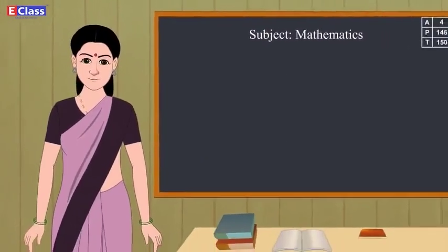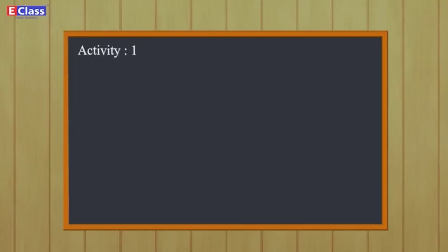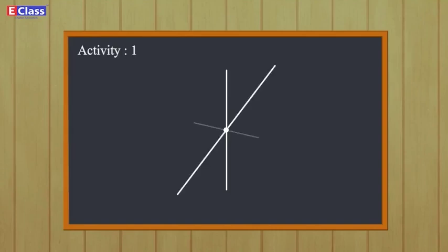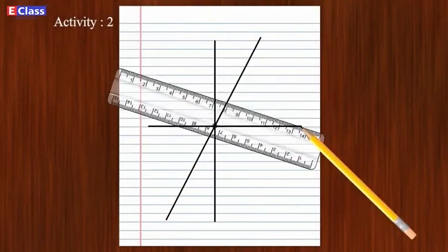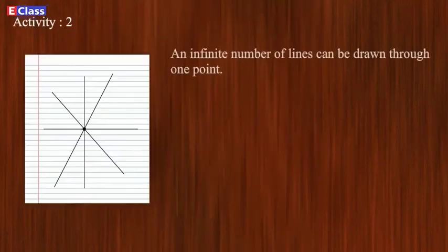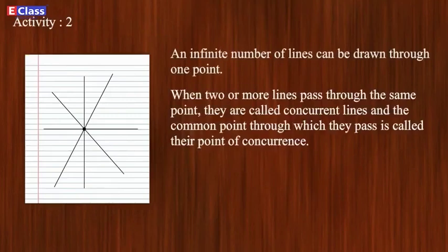Students, let's try this activity. One: draw a point on the blackboard — every student draws a line that passes through that point. How many such lines can be drawn? Activity two: draw a point on paper and use your ruler to draw lines through it. An infinite number of lines can be drawn through one point. When two or more lines pass through the same point, they are called concurrent lines, and the common point is called the point of concurrence.